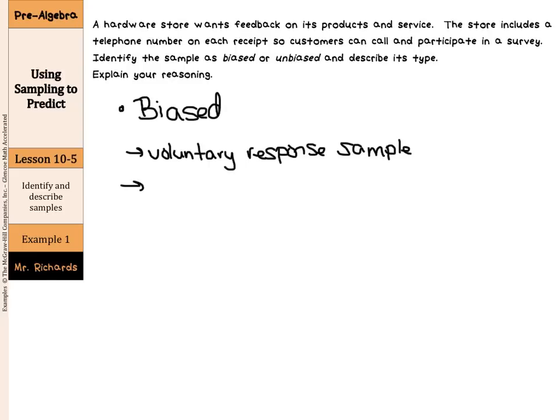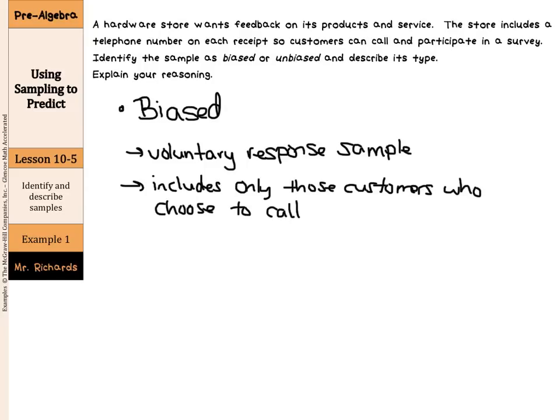Our explanation: it includes only those customers who choose to call and participate. Some people may not be able to call and participate — they may be able to go to the store, but won't, because of time or money, call a phone number to participate in a survey. So it's going to be a biased sample simply because it's voluntary response.